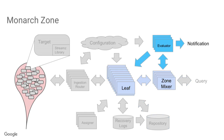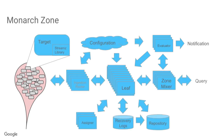For alerting within a zone, an evaluator constantly issues queries, writes the data back into the leaves, and looks at the alert threshold to determine whether to wake someone up at 2 in the morning. So a zone is a self-contained monitoring system for a strongly connected network region.